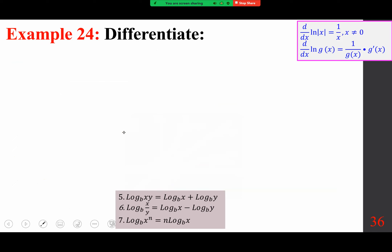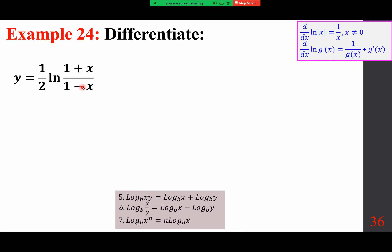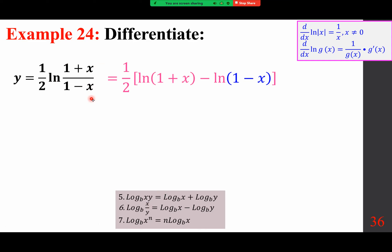Let's look at an example: we want to find the derivative of y equals one half ln of (1 plus x) over (1 minus x). First, I want to decompose that using the quotient rule of logs. Instead of differentiating directly using the quotient rule on the inside, we decompose this as one half times [ln(1 plus x) minus ln(1 minus x)]. That's the logarithmic quotient property.